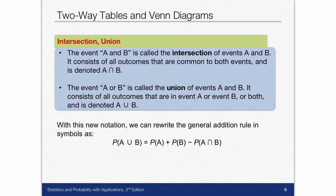So here's some definitions you need to write down. The event A and B is called the intersection of events A and B. It consists of all the outcomes that are common to both events and is denoted A intersection B. The event A or B is called the union of events A and B. It consists of all outcomes that are in event A or event B and is denoted A union B.